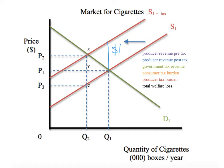P1, Q1 before the tax is the producer pre-tax revenue. This is a revenue box — the area of this whole box is the revenue. This tells the story before the tax: this is what producers were earning, P1 times Q1.